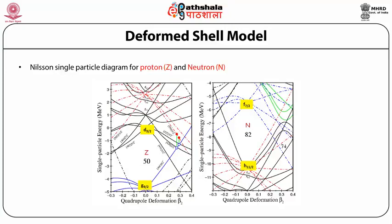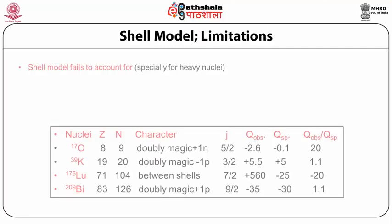In this slide the actual behavior of Nielsen orbitals as a function of deformation is shown for both protons and neutrons. The Nielsen single-particle energy levels for protons show different behavior at different deformations. A similar conclusion holds for neutrons — the behavior of various orbitals varies as a function of deformation.